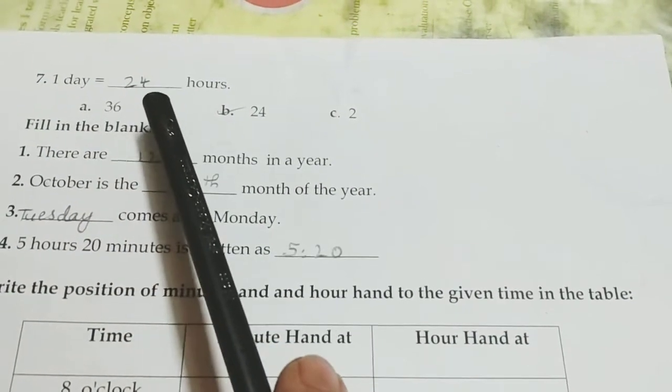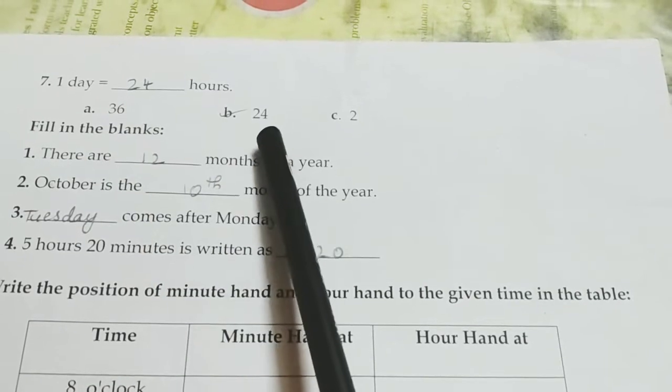One day is equal to dash hours. One day is equal to 24 hours.